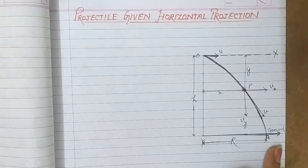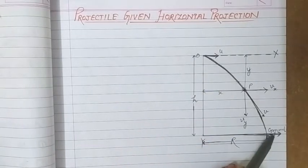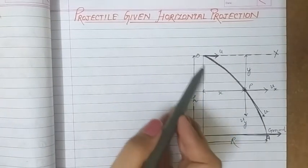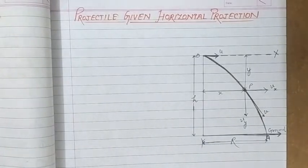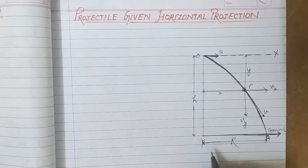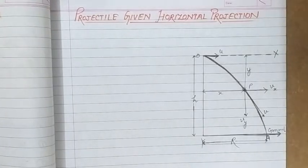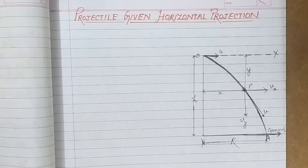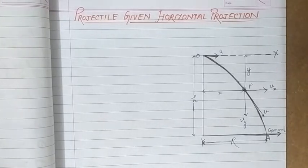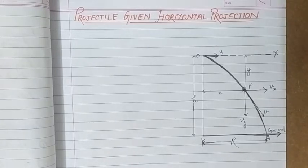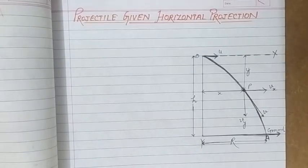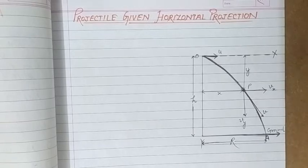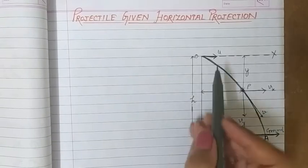We also need to find the time of flight — the time taken by the projectile between two points, meaning the time for which the projectile remains in the air. The second thing to find is the range, denoted by capital R — the horizontal distance covered by the projectile during its time of flight. Finally, we have to find the velocity at any instant.